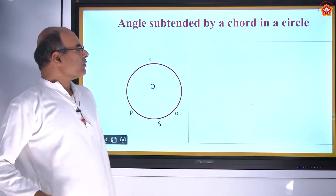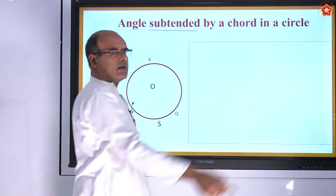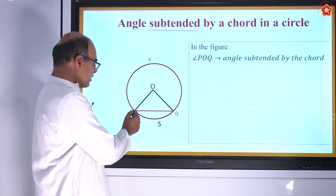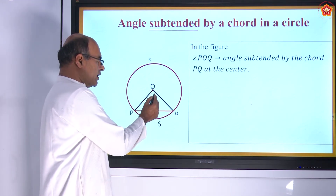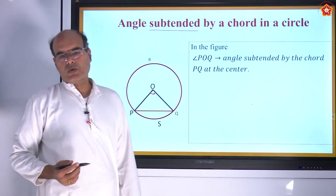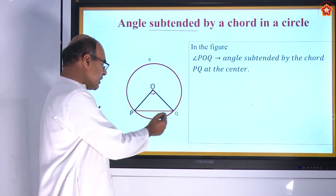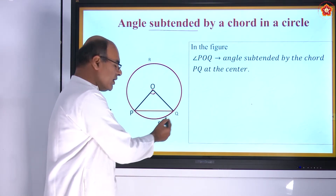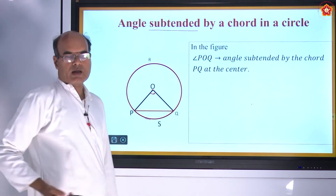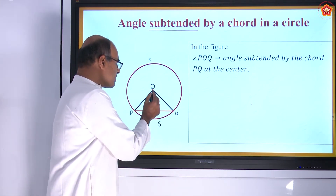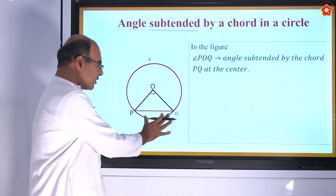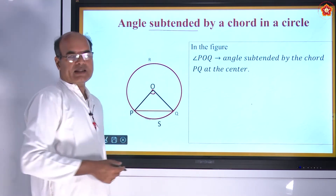Now let us understand the meaning of subtended angles. Consider a figure where PQ is a chord and the endpoints of the chord are joined to the center, forming an angle. This angle is called the angle subtended by the chord PQ at the center, or the angle subtended by the arc PSQ at the center. P and Q are the endpoints of arc PSQ, so this is the angle subtended by the arc at the center.